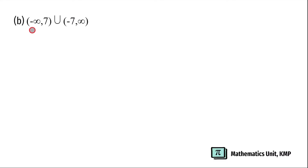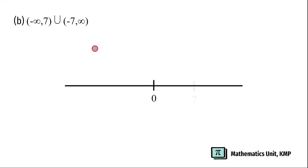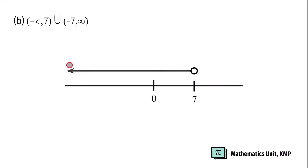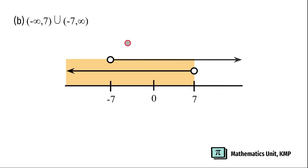Next: negative infinity to 7, union with negative 7 to positive infinity. On top of 7, we're going to put an open circle, and for negative infinity, we're going to represent it with a left side arrow. On top of negative 7, we're also going to use an open circle, and for positive infinity, we're going to represent it with a right side arrow.